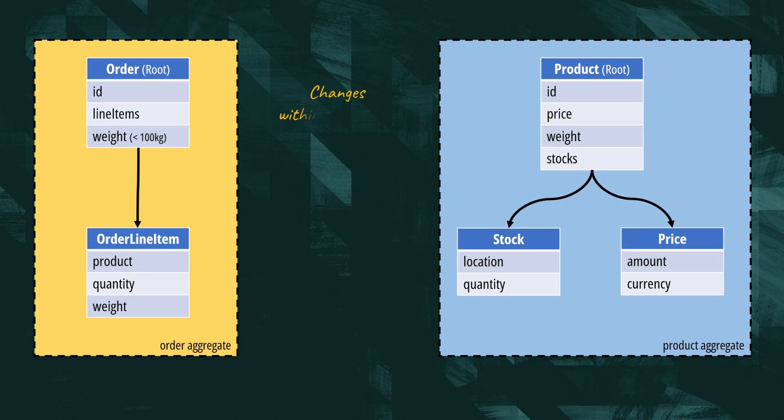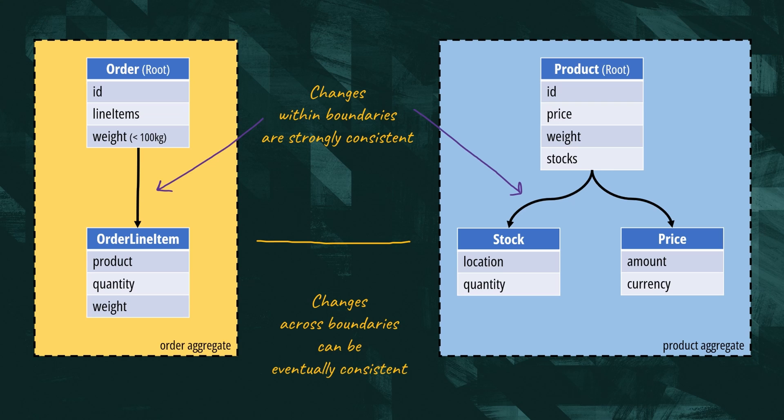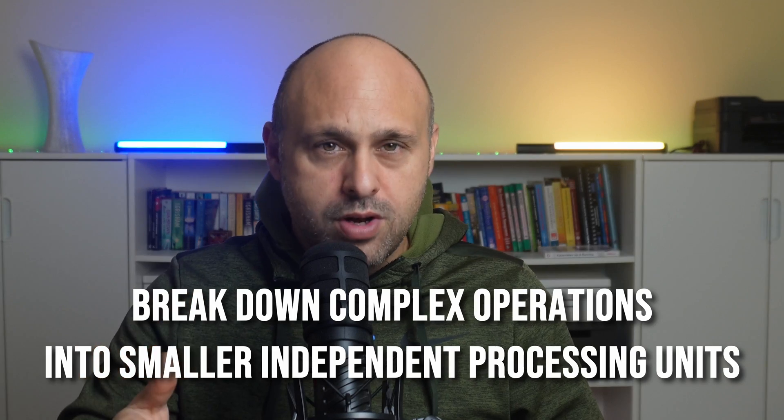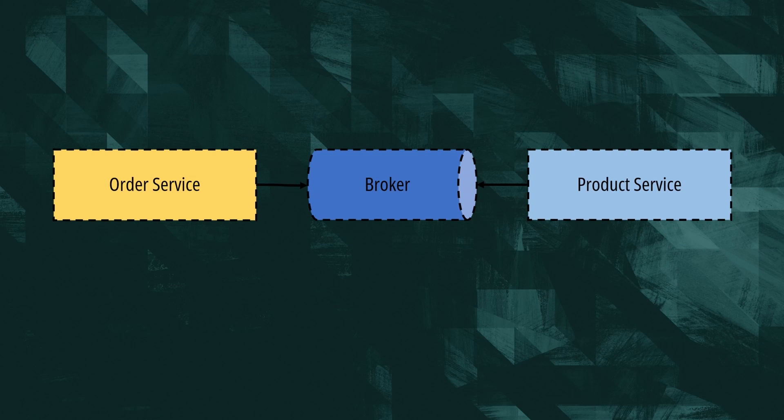Before we discuss why we often overlook aggregates, I want to add another reason for using them, which stems from their ability to manage data consistency. While within the aggregate we must maintain strong consistency, we can adopt eventual consistency across aggregates, allowing for increased flexibility and scalability. This allows us to break down complex operations into smaller independent processing units. These units can be handled by different processes, promoting a microservices architecture that scales effectively and enhances maintainability, when done properly.